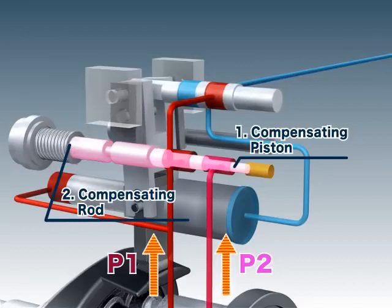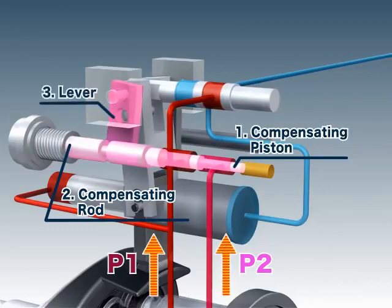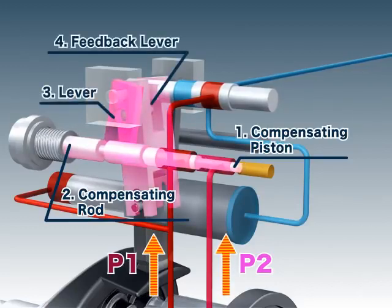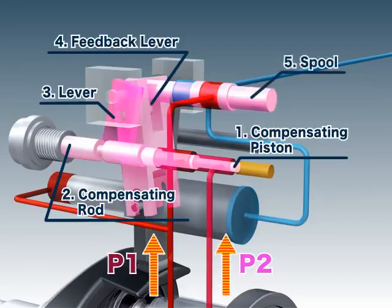As the compensating rod is pushed, the lever rotates, moving the feedback lever, which in turn moves the spool.